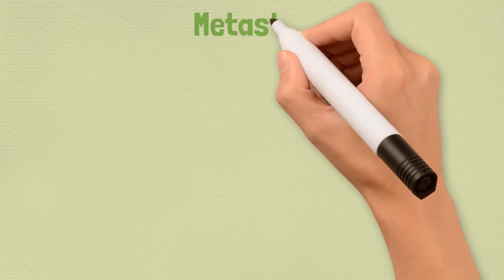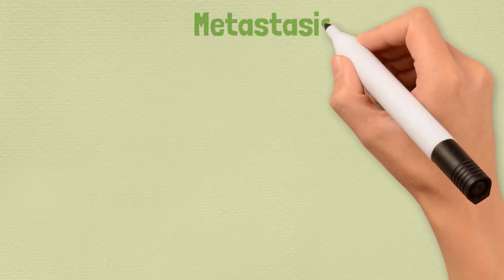When distant spread or metastasis of cancer occurs, it is stage 4 of the disease. It happens in three ways. Firstly, via blood.